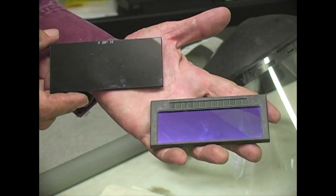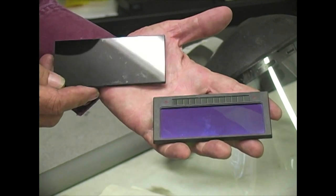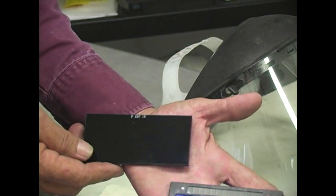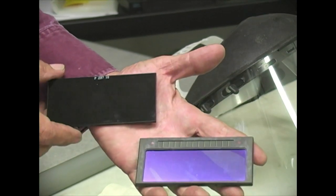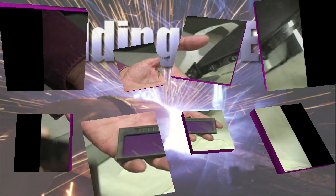The lenses that you see are the old style and the new style. The old style is a fixed dark lens and the new style is an auto darkening lens.